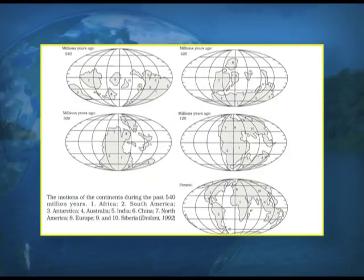This is the diagram which depicts the fragmentation of Pangaea into different parts and the wandering of these continents over a period of time.